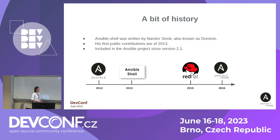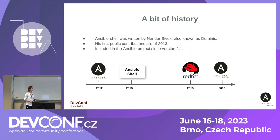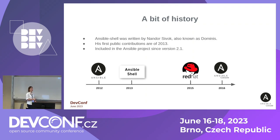A bit of history: Ansible shell was written by a contributor known as Dominic. His first contributions are from 2013 — Ansible itself appeared in 2012 — so the need for something like Ansible shell was immediately there. It became part of the Ansible codebase in 2016 after the acquisition of Ansible by Red Hat, and it's been part of the official Ansible project since version 2.1.